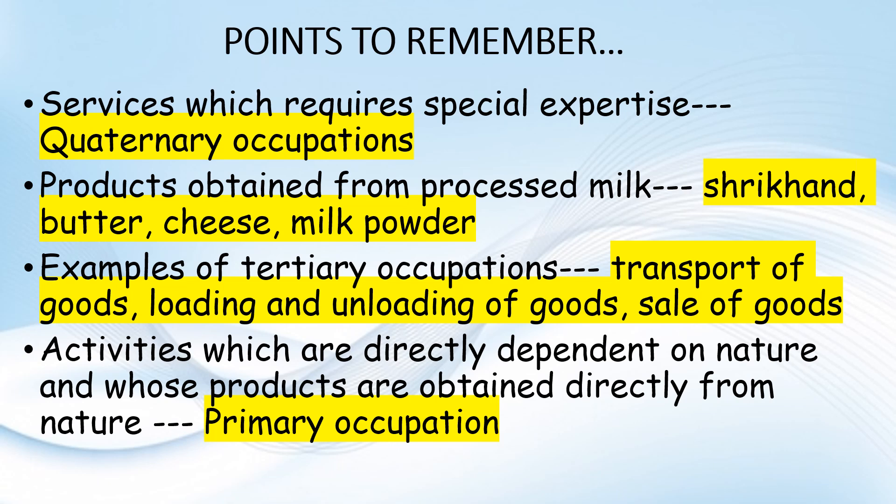Services which require special expertise are quaternary occupations. Products obtained from processed milk include cream, butter, cheese, milk powder. Examples of tertiary occupation: transport of goods, loading and unloading of goods, sale of goods. You will have full explanation with images, definitions, and much more in your next video — just wait a few days.